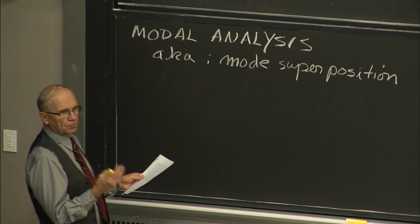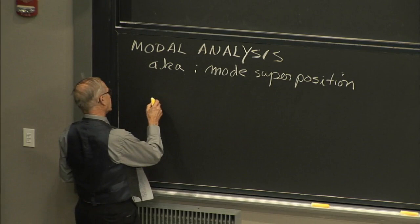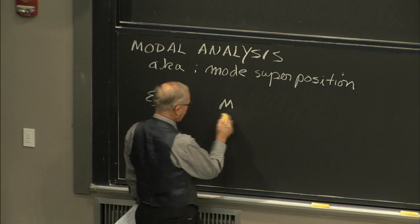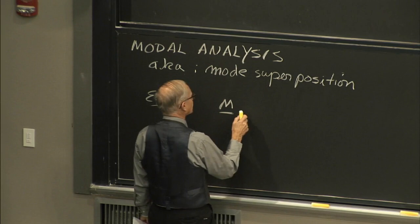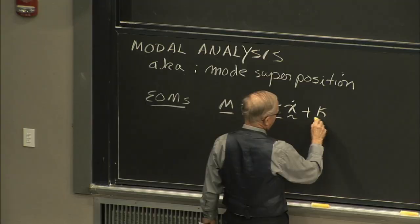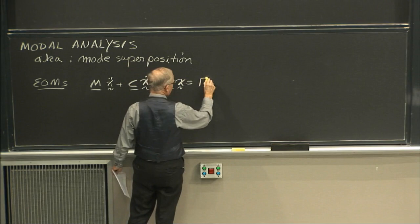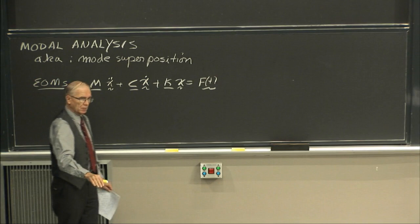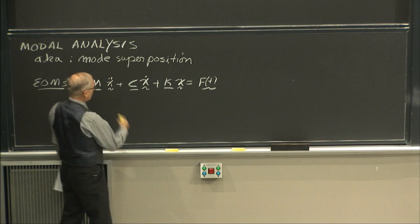In general, we can write the equations of motion for finite degree of freedom systems as a mass matrix times an acceleration vector, plus a damping matrix times a velocity vector, plus a stiffness matrix times a displacement vector, all equal to some external vector of excitations. I'm writing these symbolically and will refer to all of those coordinates with an x vector.